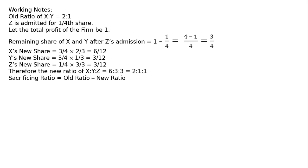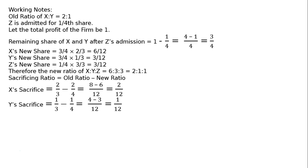Sacrificing ratio equals old ratio minus new ratio. X's sacrifice: old share 2 by 3, new share 2 by 4. LCM 12: 8 minus 6 equals 2 by 12. Y's sacrifice: 1 by 3 minus 1 by 4, LCM gives 4 minus 3 by 12, that is 1 by 12. Therefore, the sacrificing ratio of X to Y is equal to 2 to 1.